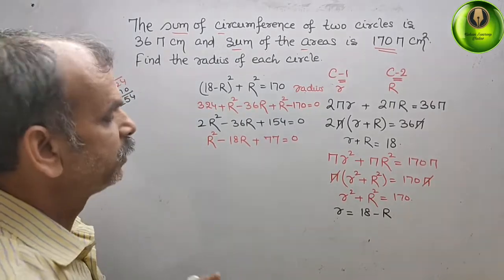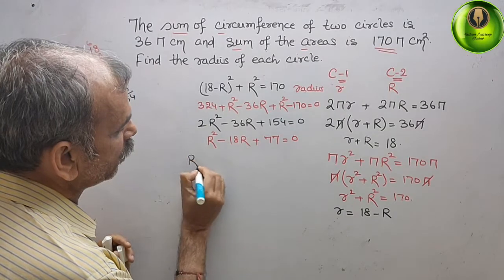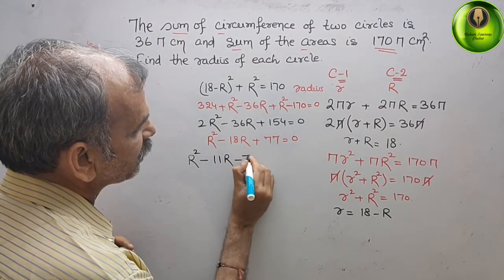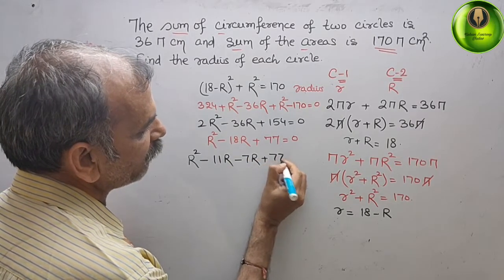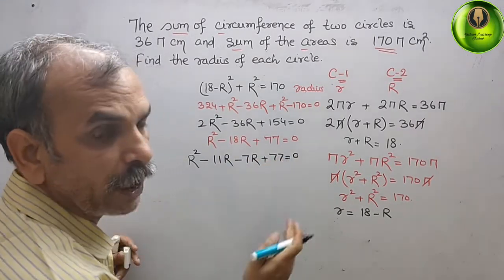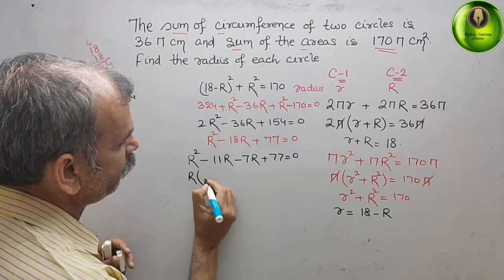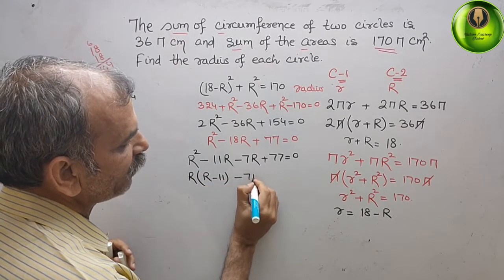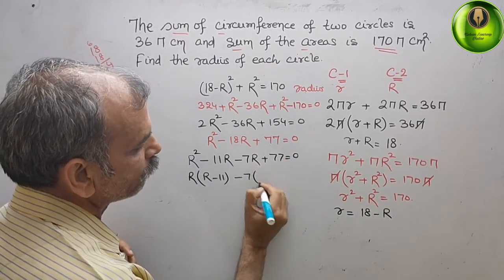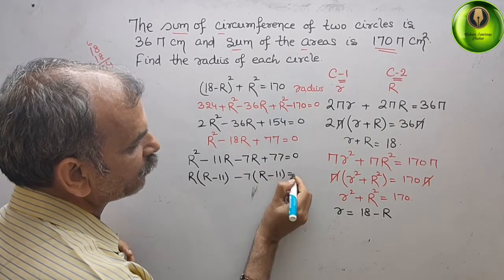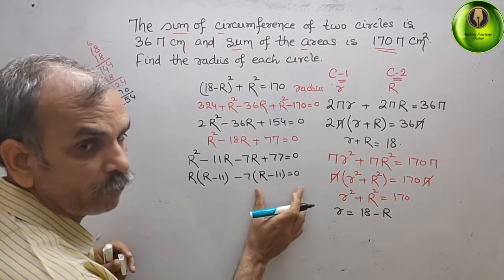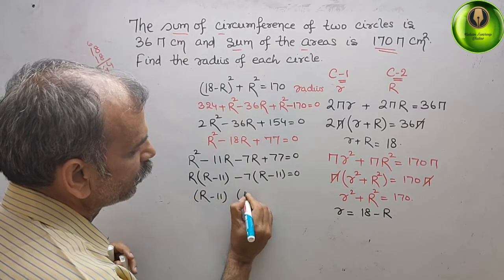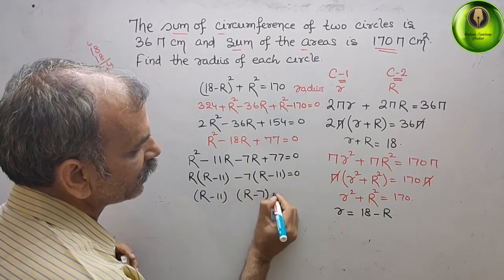So the middle term splits as: R² minus 11R minus 7R plus 77 equals 0. Taking R as common from the first two terms gives R(R minus 11), and taking 7 as common from the last two terms gives minus 7(R minus 11), which equals 0. So the factors are (R minus 11)(R minus 7) equals 0.